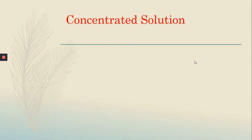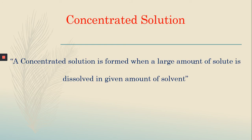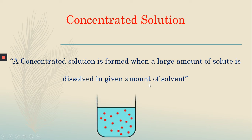After this, we have a concentrated solution. According to the definition, a concentrated solution is formed when a large amount of solute is dissolved in the given amount of solvent. When there was a dilute solution, we were dealing with a small amount of solute, but in a concentrated solution, a large amount of solute is dissolved. You can see the red tiny particles are more in number as compared to the dilute solution — that is showing it is actually a concentrated solution.